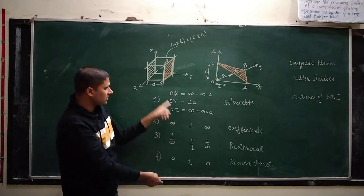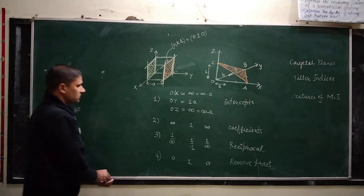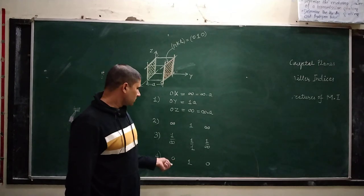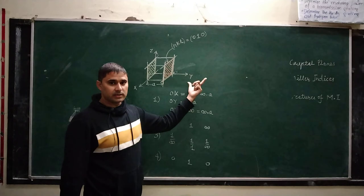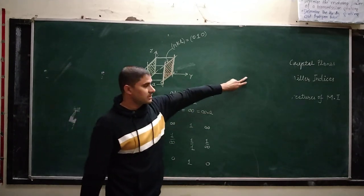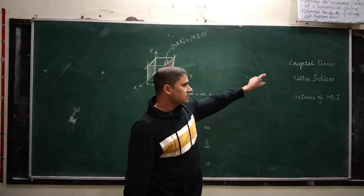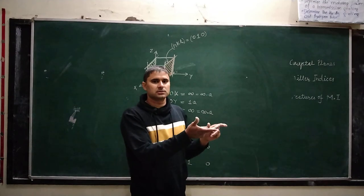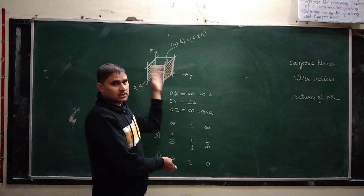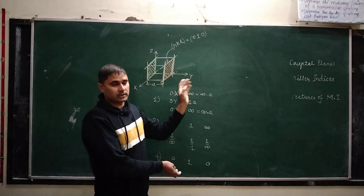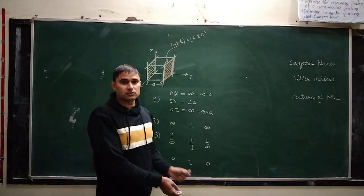Okay class. So the length of the video lecture has been about 30 minutes. In the next lecture, we will come with more examples regarding the same topic but with different orientations. And we will see that the planes which are parallel to each other are having similar Miller indices. Thank you class for watching the lecture.